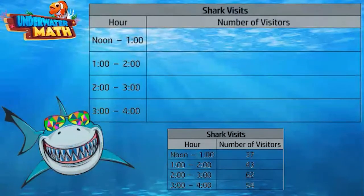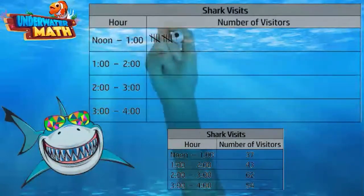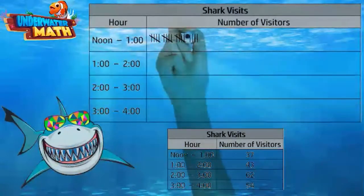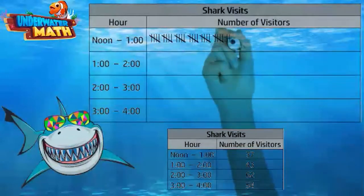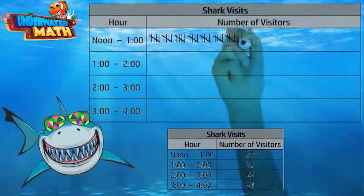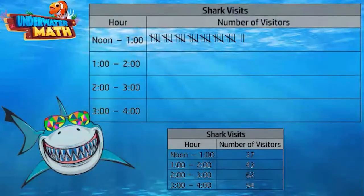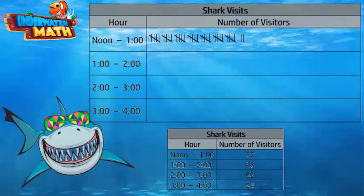Let's draw bundles of five: 5, 10, 15, 20, 25, 30, 35, then two extra tallies to get to 37. That's how it's done! At one o'clock, 43 people came. I'll make bundles of 5: 5, 10, 15, 20, 25, 30, 35, 40, then single tallies up to 43.